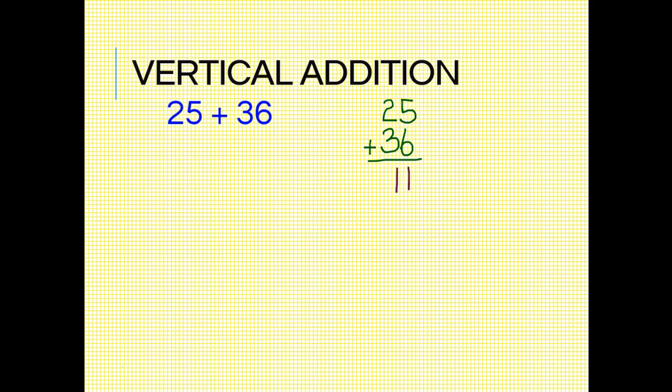Now my tens, 2 tens and 3 tens, or 20 plus 30, equals 5 tens, which is 50. Now to combine my tens and my ones, 11 plus 50 equals 61.